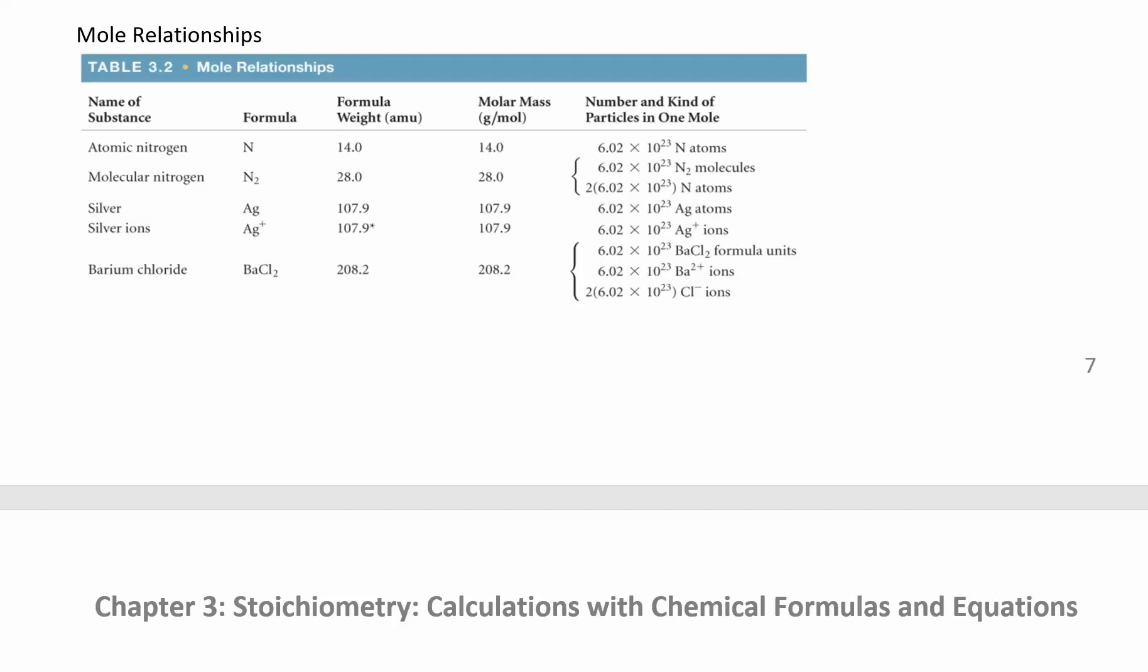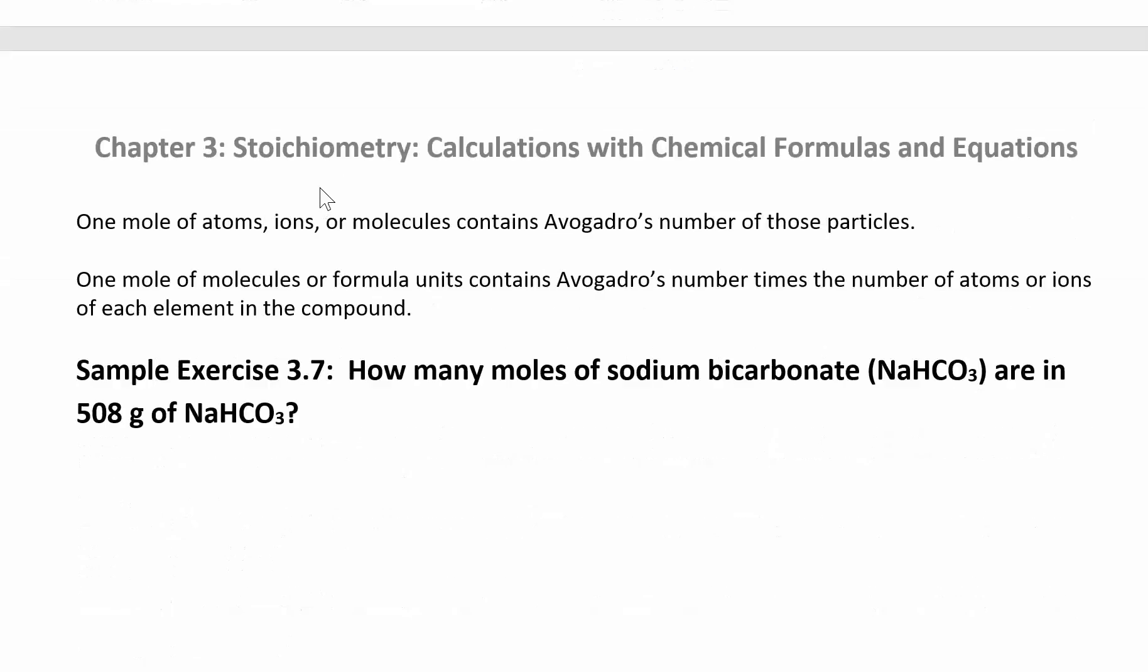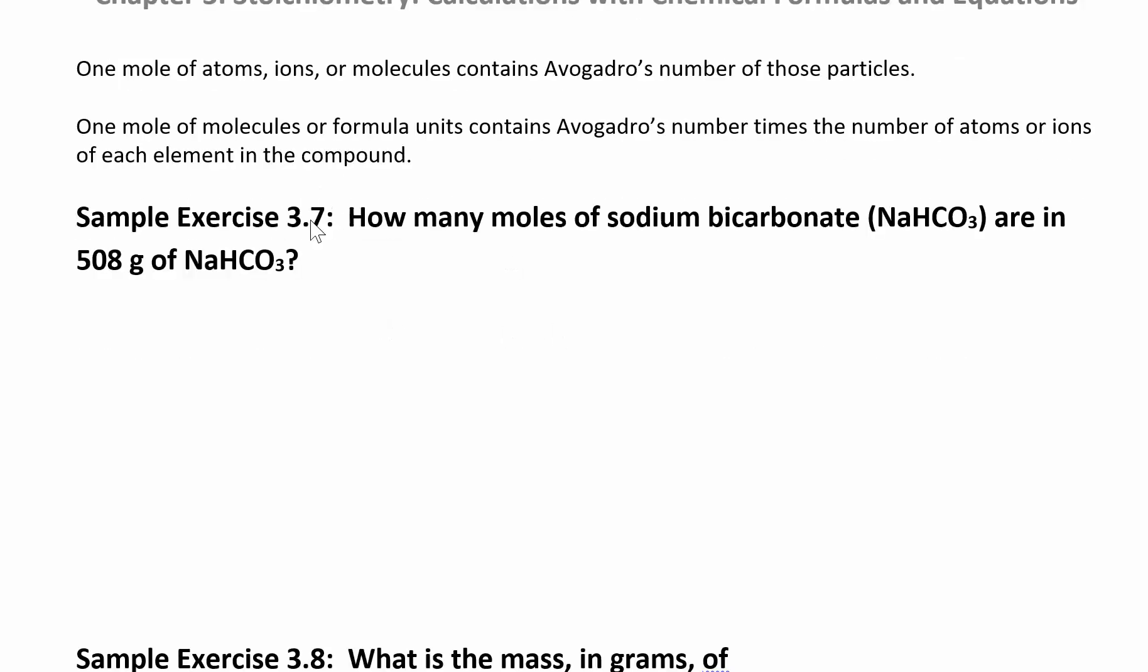So if you had one mole of nitrogen molecules, that's N2, you'd have twice as many nitrogen atoms because each one of the molecules has two atoms. We'll be able to convert from moles to atoms based on the chemical formula.